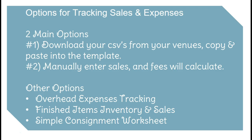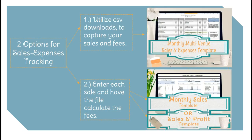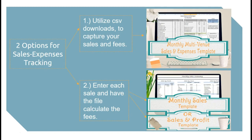I have templates to cover both of those areas, and then a few other options to mention are the overhead expenses tracking template, the finished items inventory and sales, and also a simple consignment worksheet. This first option will capture your sales and your fees, and the second option involves entering each sale. The file can be set up to calculate the fees, so you're not going to have to calculate each fee. You'll set up in the fee chart your venue and the percentage they charge, and it will calculate it when you enter the venue for each sale.